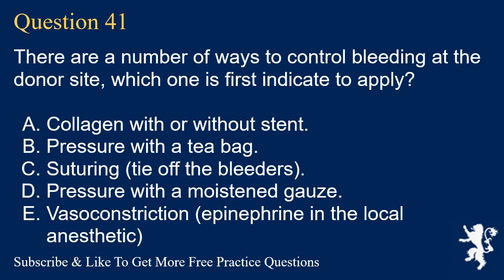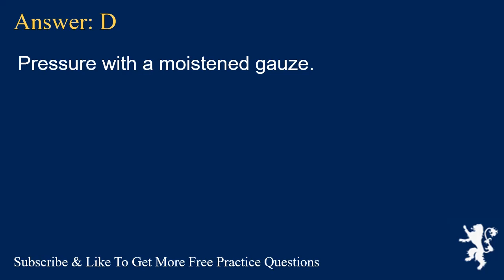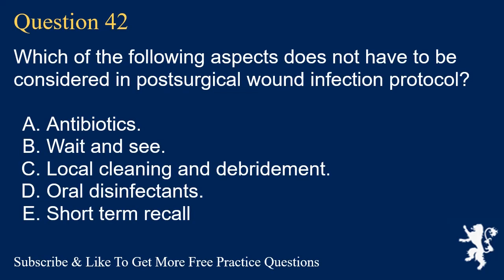Question 41. There are a number of ways to control bleeding at the donor site; which one is first indicated to apply? A. Collagen with or without stent. B. Pressure with a tea bag. C. Suturing — tie off the bleeders. D. Pressure with a moistened gauze. E. Vasoconstriction — epinephrine in the local anesthetic. Answer: D. Pressure with a moistened gauze.